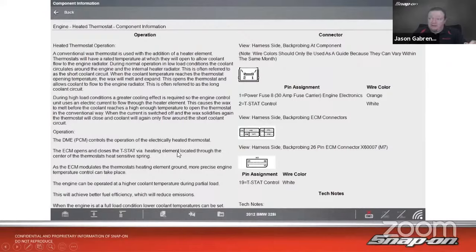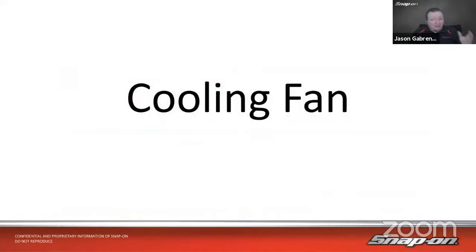So it'll open it up at a cooler temperature. The PCM controls the operation of the thermostat, modulates the thermostat's heating element ground. More precise engine temperature control can take place. And then how am I going to test it? Well, you can test the pulse width. You can test the voltage on that as well. So that's just one example. There's quite a few cars that use this element now, not just Mercedes, BMW, but Chevy, Ford, that sort of thing as well.